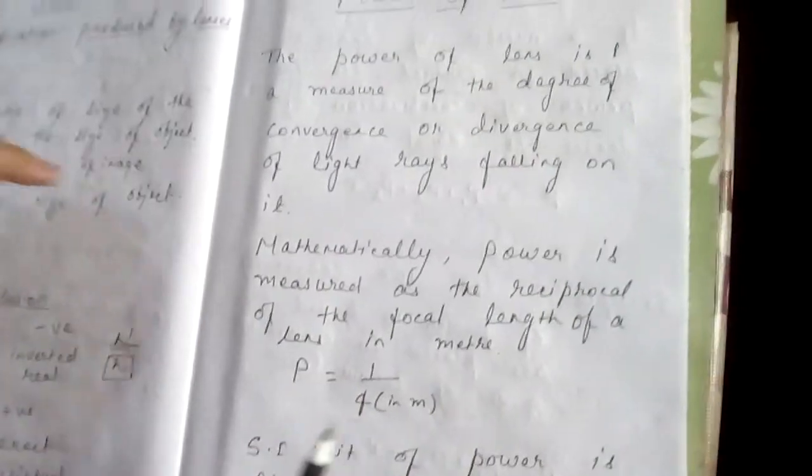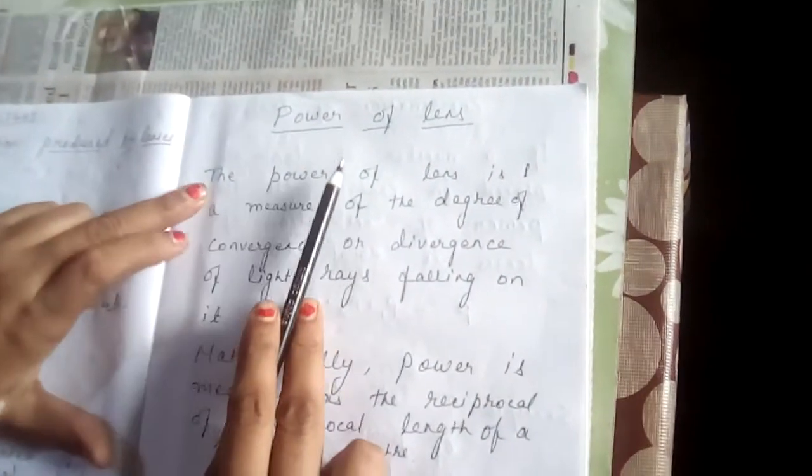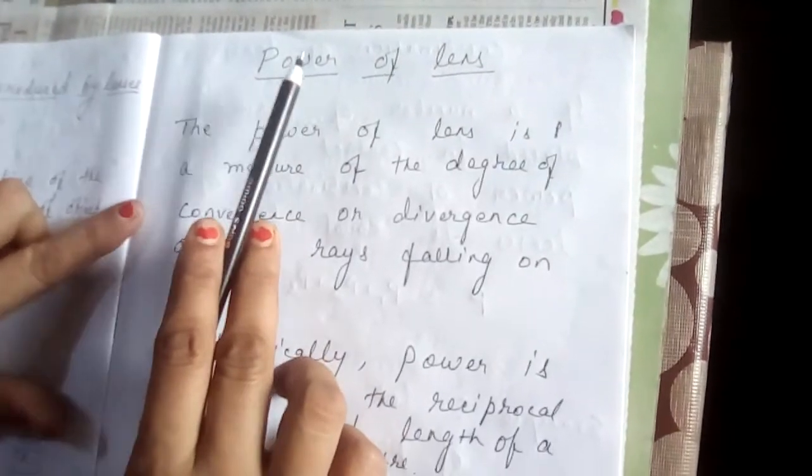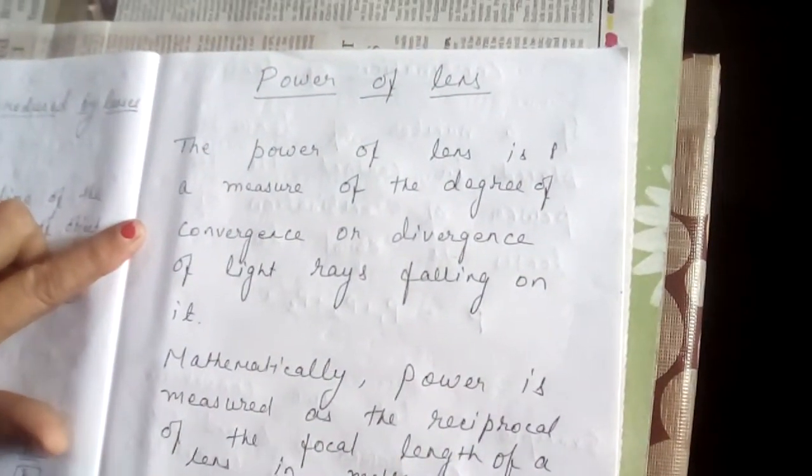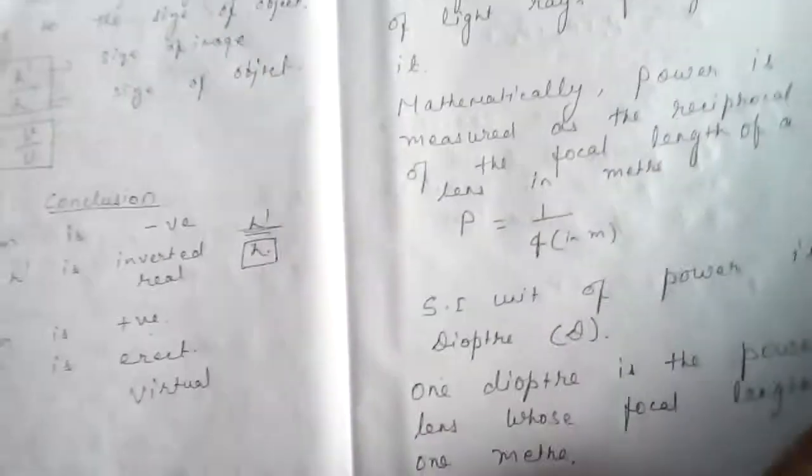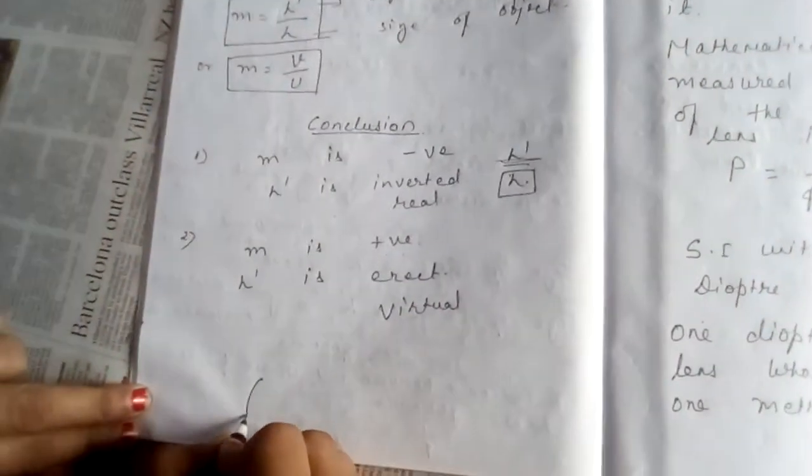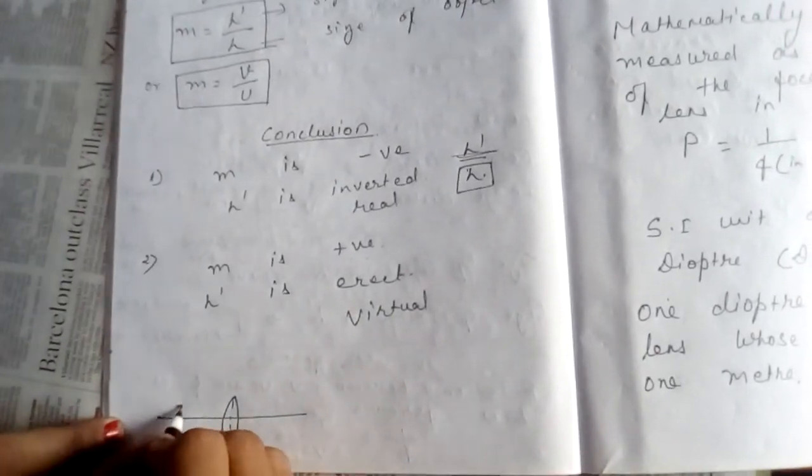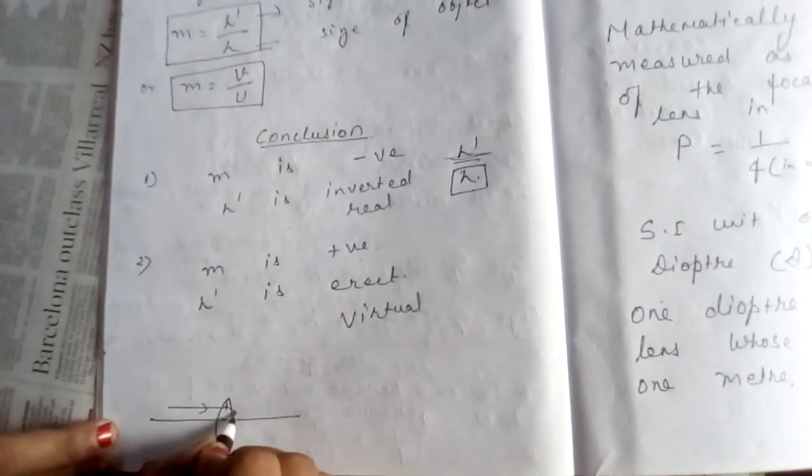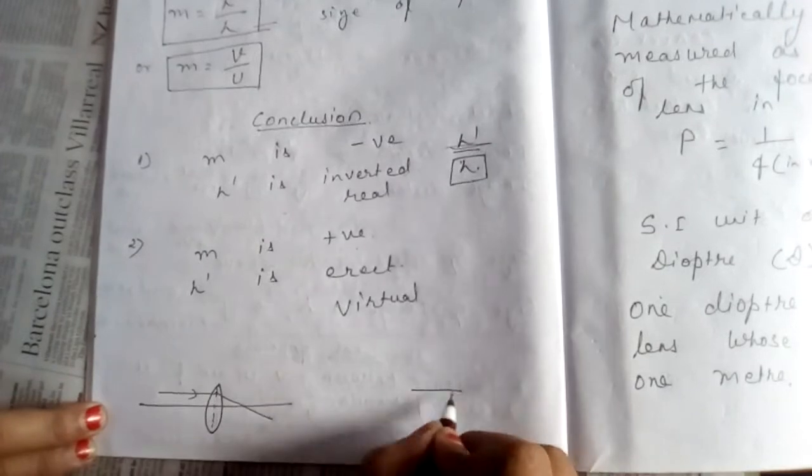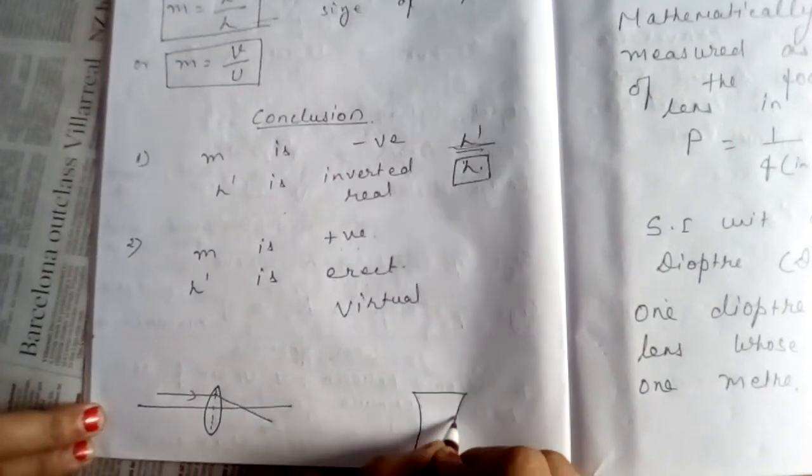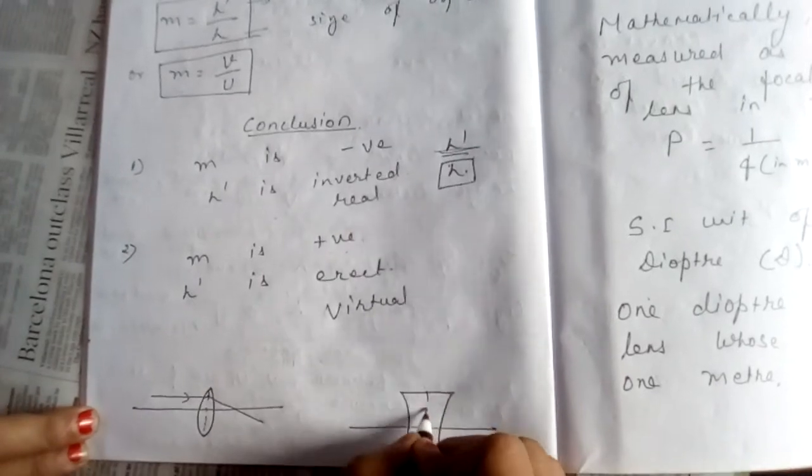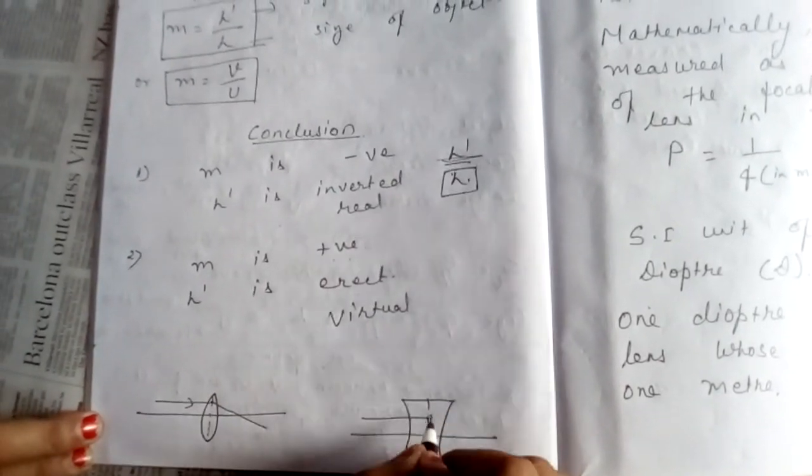Next, you come to power of lens. Power. We have seen in the image formation that the convex lens converges array passing through it and concave lens diverges ray passes through it.